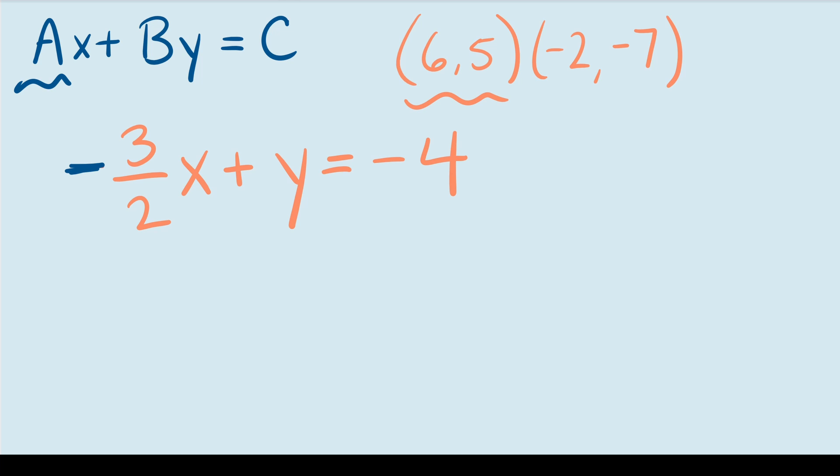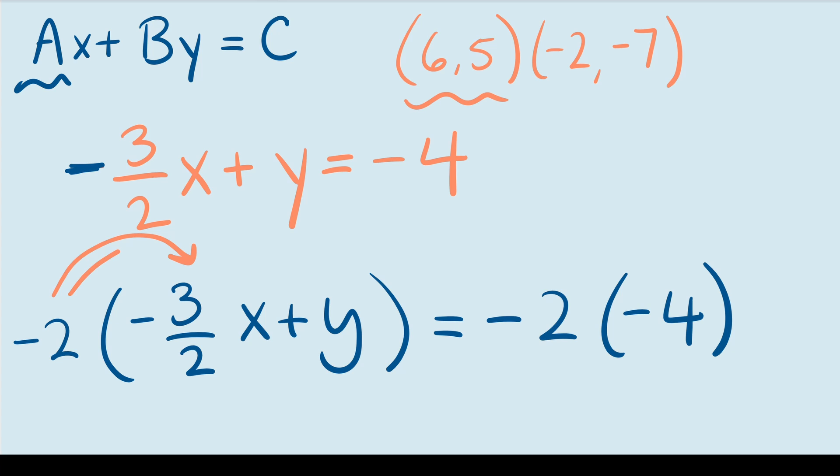So let's go ahead and do that. If I multiply by negative 2, I have to do it to both sides of the equation. So I have the left hand side and I have the right hand side. For the left hand side, we have to use the FOIL method. So I'm going to multiply the negative 2 with the x term and with the y term. For the x term, the negatives go away and the fraction goes away so I'm left with 3x.